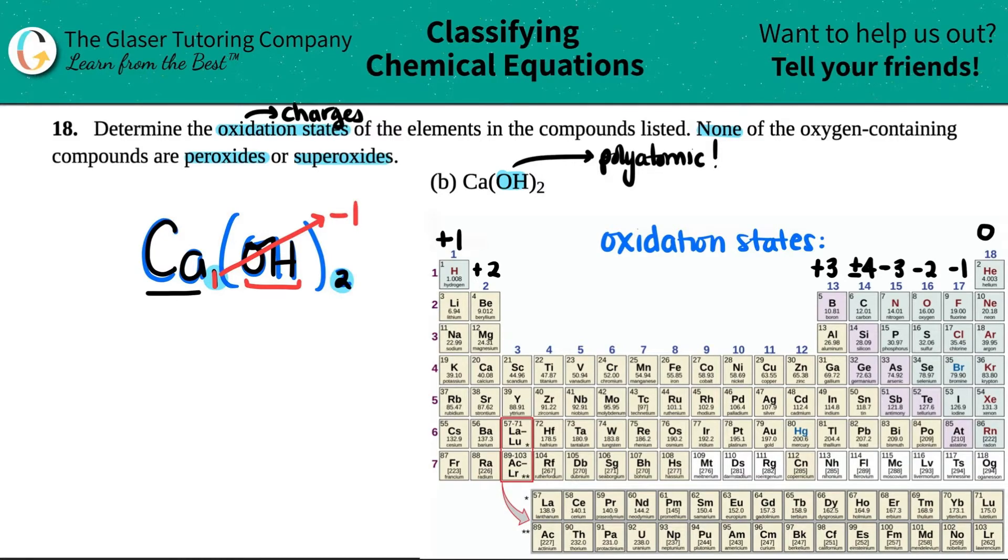This one crisscrosses up, telling me that my OH as a whole was a negative one charge. This two crisscrosses back up to calcium, telling me that calcium was a plus two. Remember, pluses are in the front, minuses are in the back - that's just standard notation.